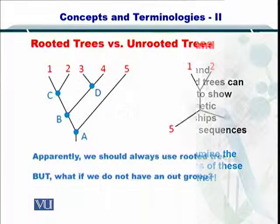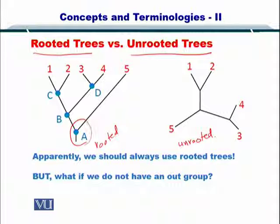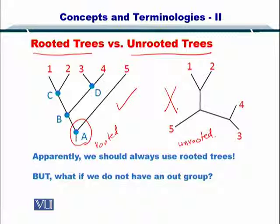Let's examine the properties of these trees further. Here you see a rooted tree and here is an example of an unrooted tree. In the rooted tree, you have a root, while in the unrooted case you have nothing as a root. A simplistic opinion would be that we should always use rooted trees because they help us organize the order of evolution, but there are several advantages of unrooted trees as well.